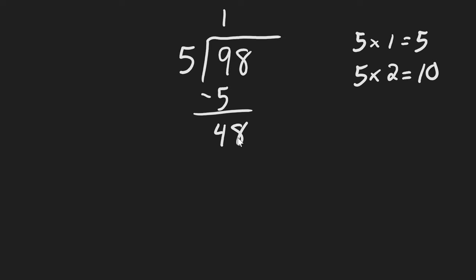5 goes into 48 how many times? Well, 5 times 9 is 45, and 5 times 10 is 50. 50 is bigger than 48, so the closest we get is 45.